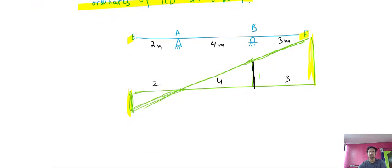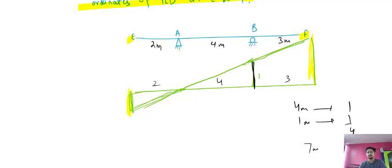Using the unitary method: for 4 meters it is going 1 unit displacement, so for 1 meter it will be 1/4. For 4+3 = 7 meters it will go 7/4. So the ordinate at F will be 7/4.